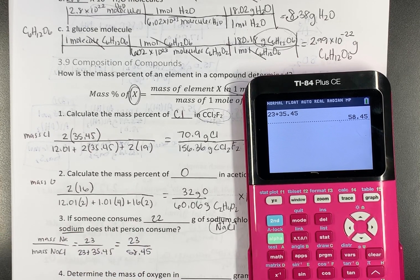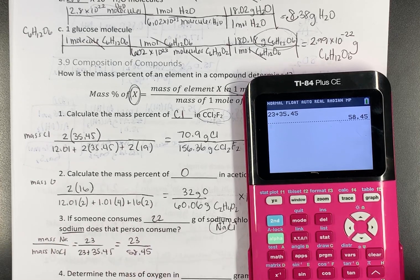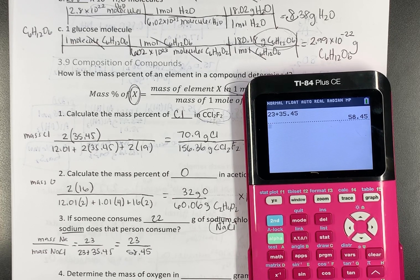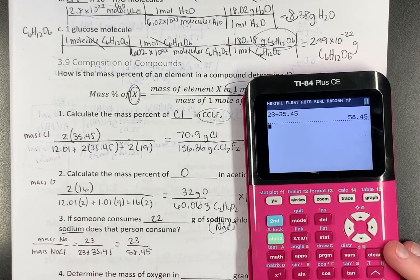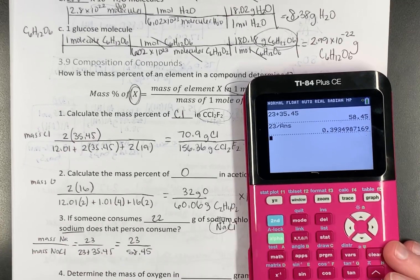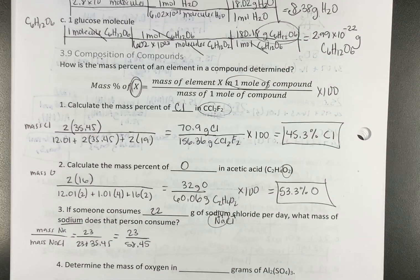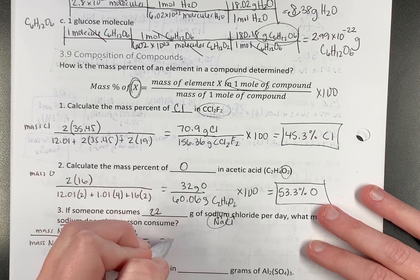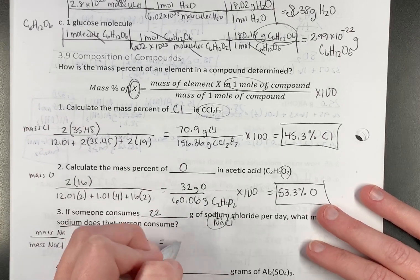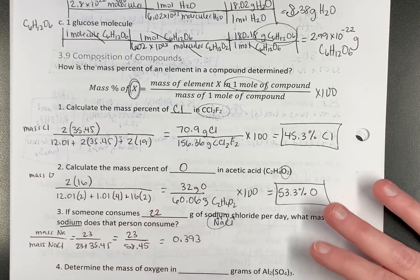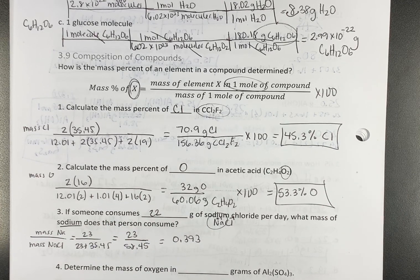So 23 over 58.45. Who wants to do this as a proportion? Nobody, I like that. Now, the key here, if you're going to do it this way, is don't multiply by 100. You're just going to have to divide by 100 again. So do 23 divided by that. And that tells you that for every one gram of sodium chloride, there are 0.393 grams of sodium.